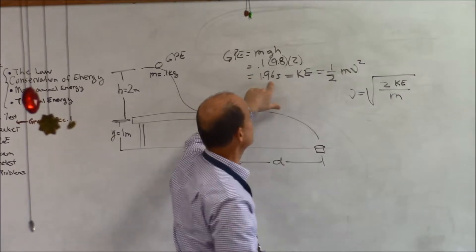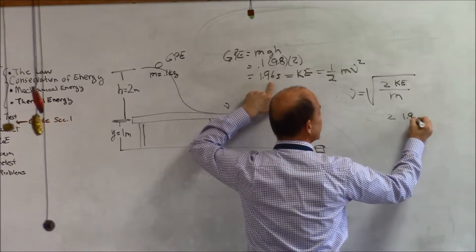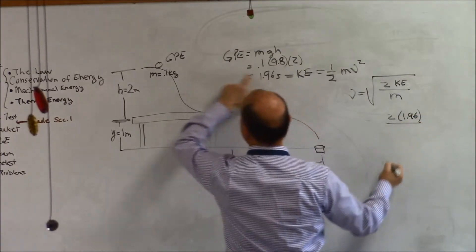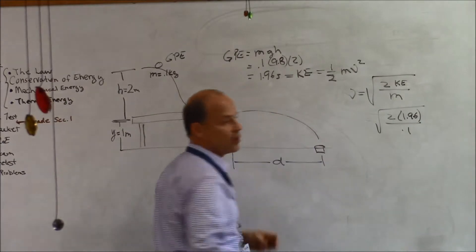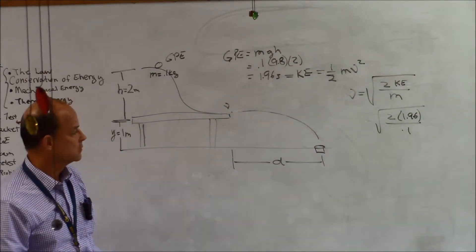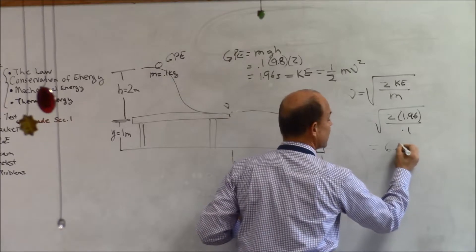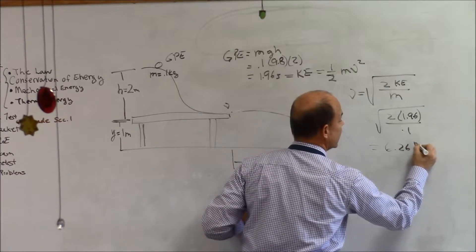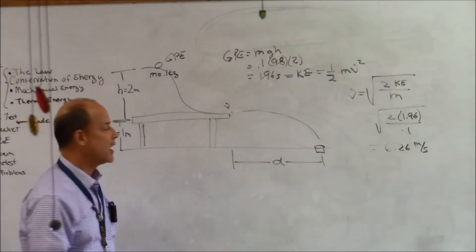Since I know that all my KE came from my GPE and I know what the value of the GPE is, then all I have to do is write 2 times 1.96 divided by the mass of the object, which is 0.1, take the square root of the whole thing: 6.26. Actually that's pretty booking for a marble - 6 meters a second is going pretty fast.